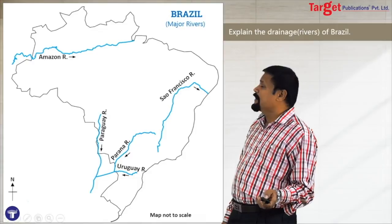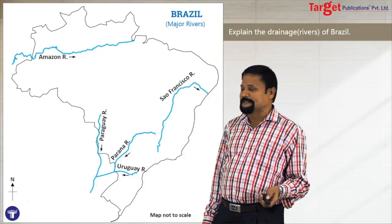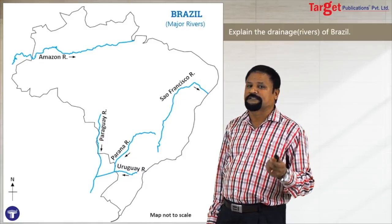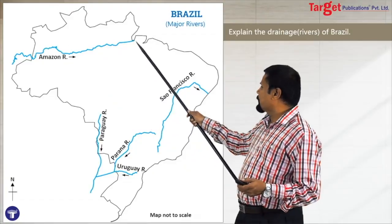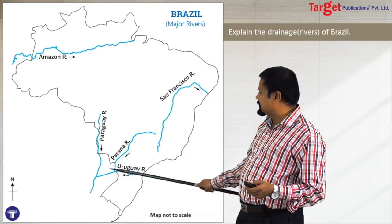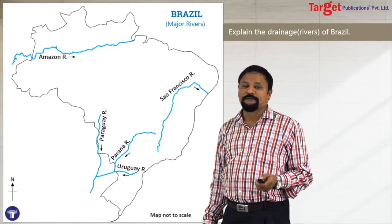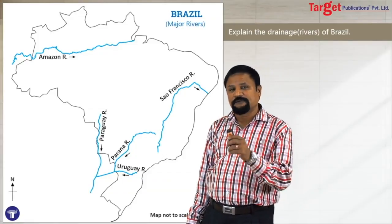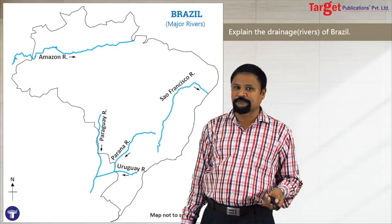Same way, they may ask: explain the major rivers of Brazil. There are three major river systems plus coastal rivers. You can draw the Amazon River, then show the Paraguay, Parana, and Uruguay river system, and then the São Francisco River. These rivers can also be very useful for your map-marking questions.